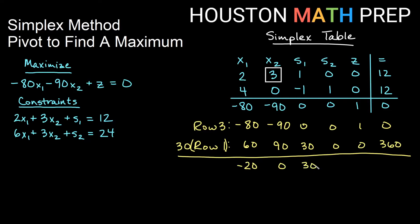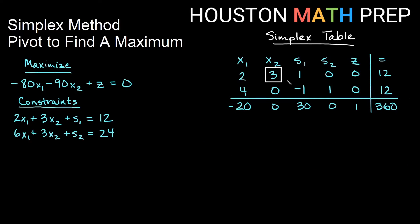Adding those together we get: negative 20, 0, 30, 0, 1, and 360. Remember, we were changing row three, so this is our new row three. We'll drop that into our table, then check that all entries in the pivot column besides the pivot itself are zero — and they are. So we're done pivoting this column.